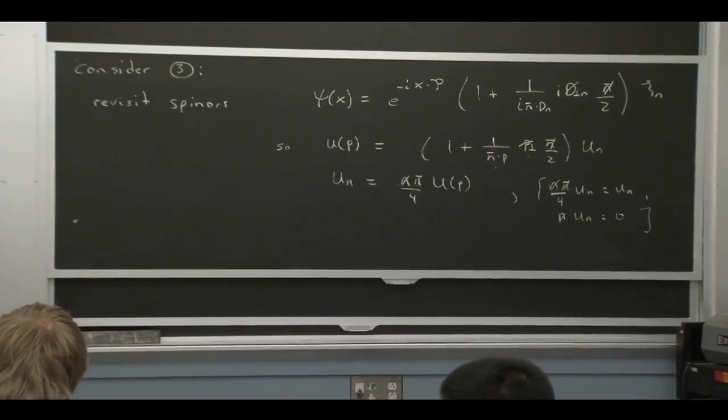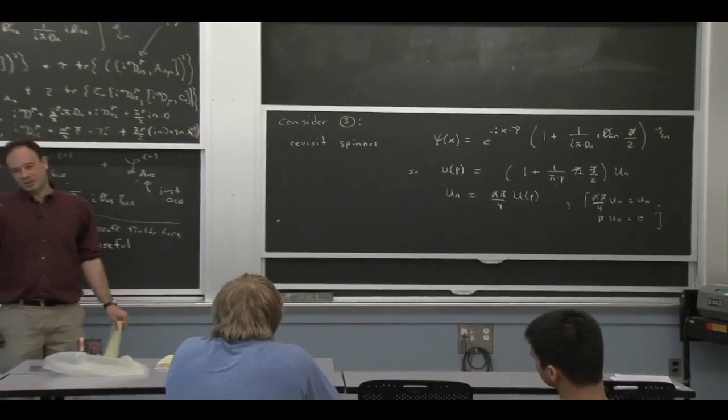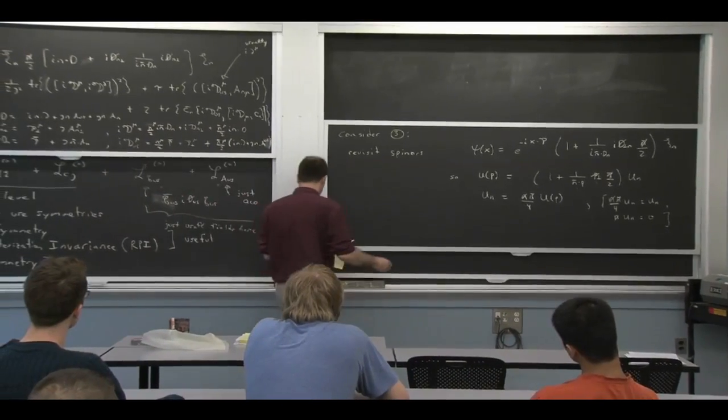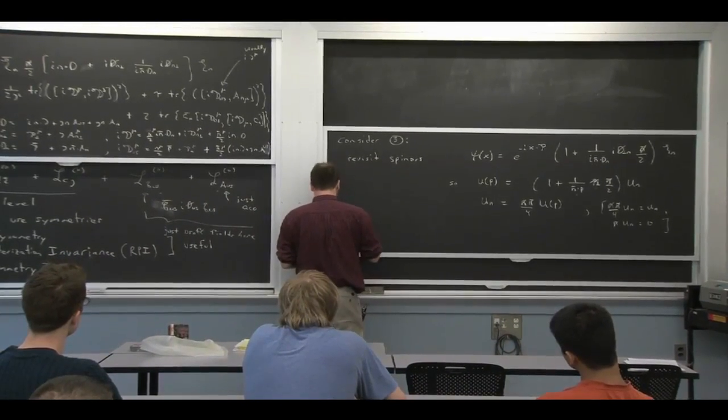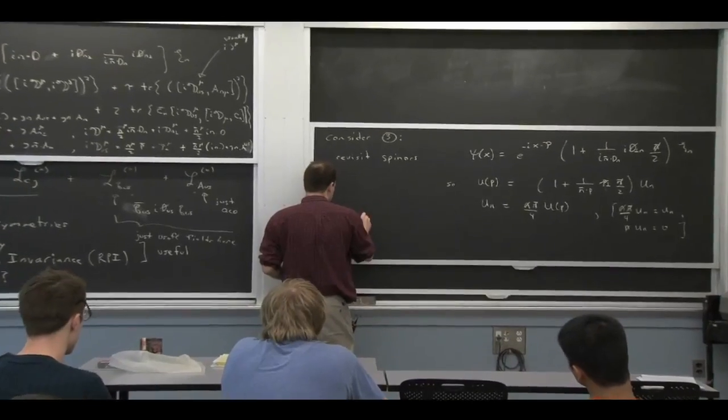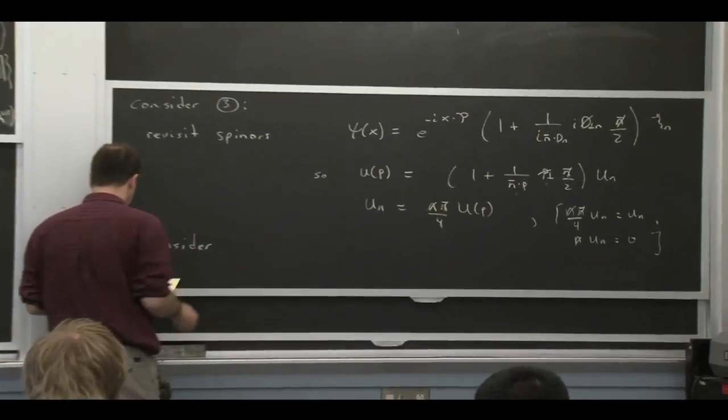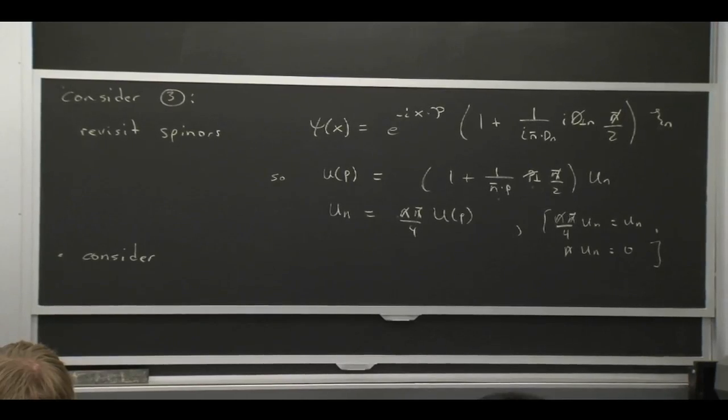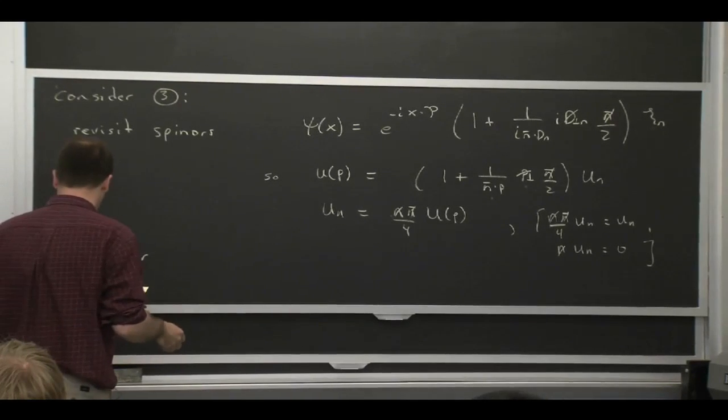So first thing you might consider is whether, when I take this cn field and I take the Lagrangian up at the top of the board, do I just get the collinear propagator that we talked about? And indeed, you do. It's kind of obvious for the momentum-dependent parts. And really, you might only worry about the spin.